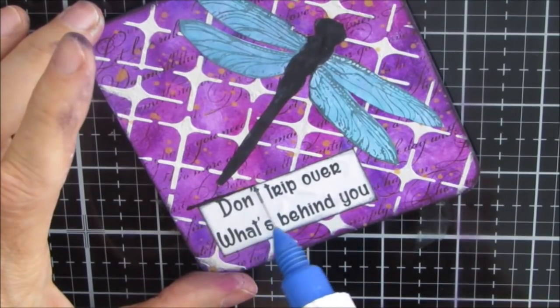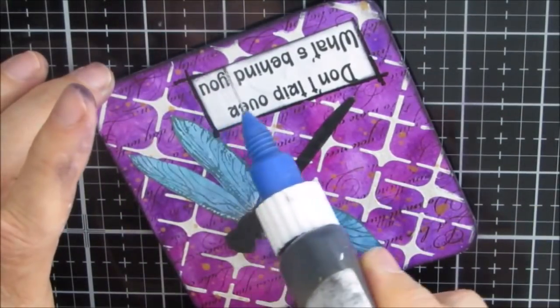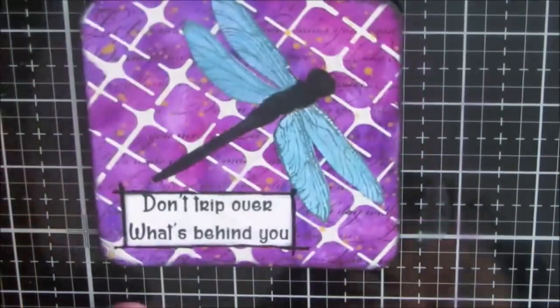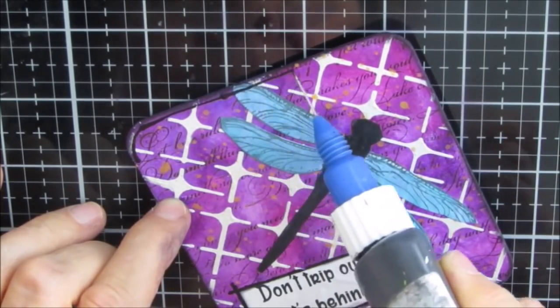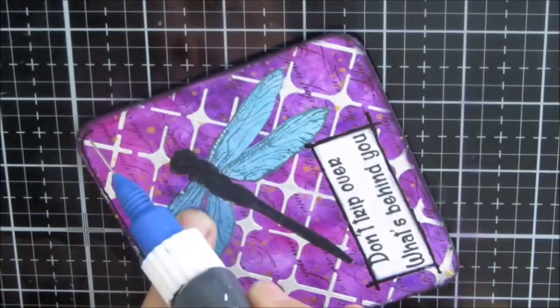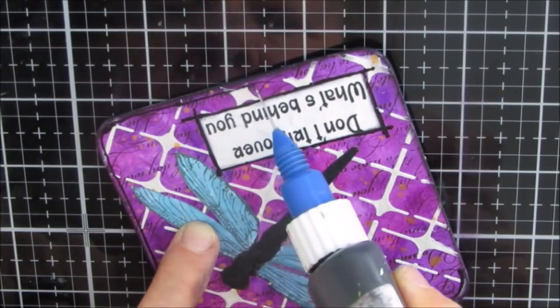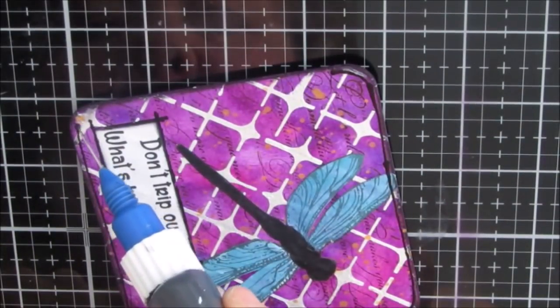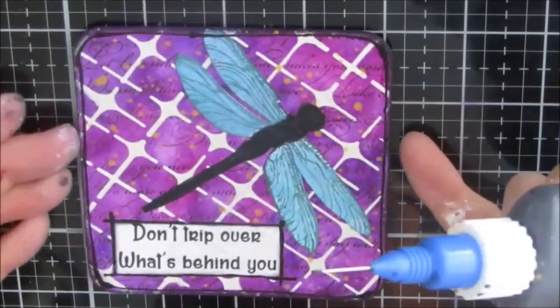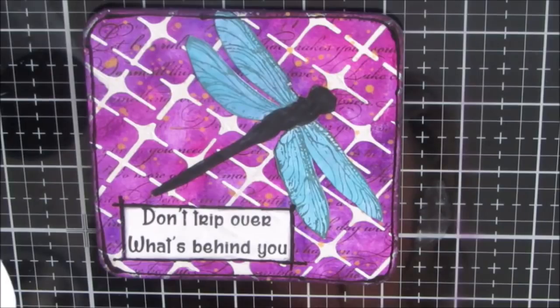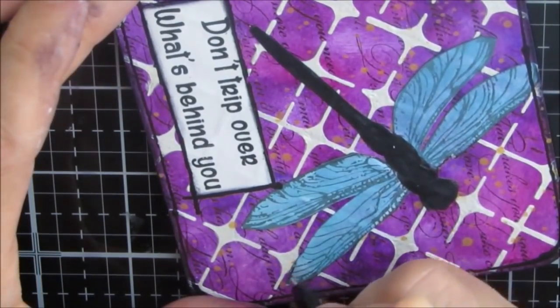So I grabbed my fine line bottle and I've got black paint that has been thinned and I'm just outlining the sentiment and I'm also going to go around the coaster. You've seen me do this before. I find it easier to push away from myself with the fine line bottle. I find I have better success. Try it my way, try it the way that feels most comfortable for you. Looking at this now, I would like to have some of that teal splattered on the background as well.